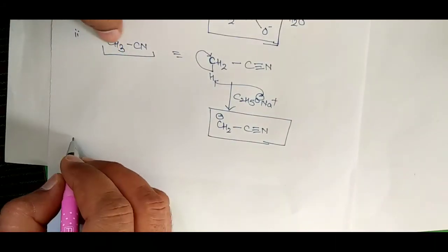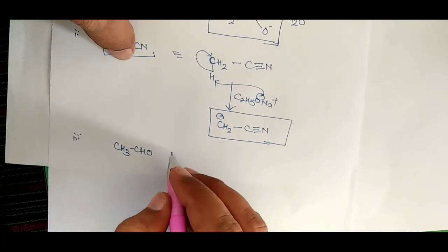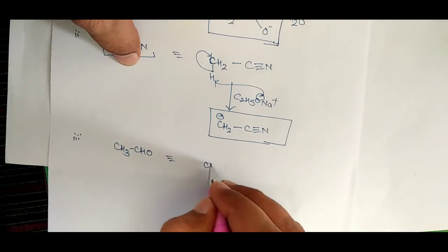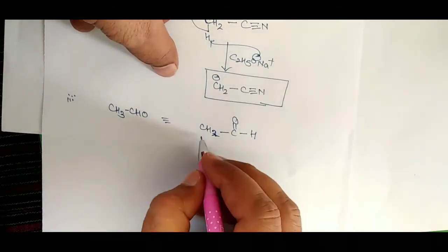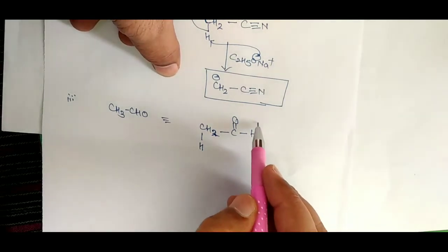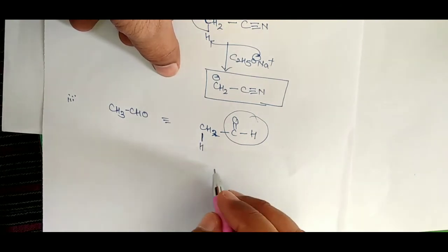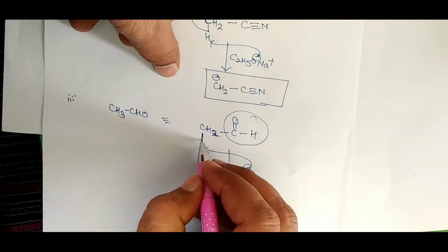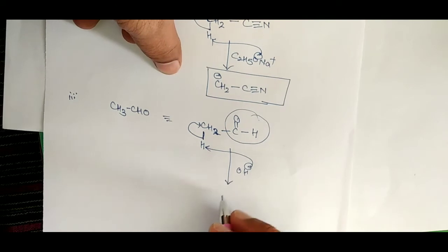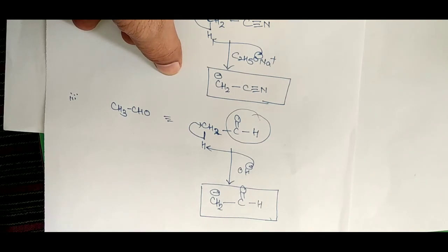Now if we have acetaldehyde CH3CHO, it can be written as CH3, CH2, and C double bond O with H. The carbonyl functional group is electron-withdrawing, so there is less electron density on the alpha carbon. When we add a base, it abstracts the proton from there, and we get CH2 with a negative charge and C double bond O with H. This is the third method of preparation of carbanion.